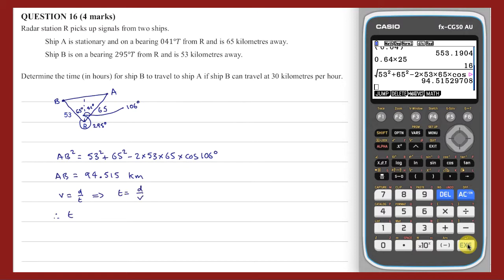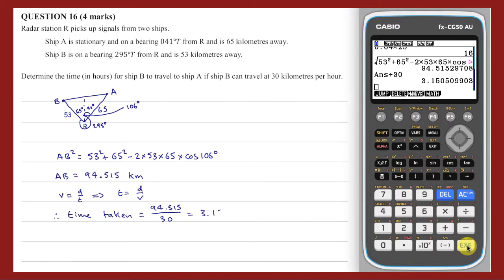If velocity equals distance over time, then time equals distance over velocity. Hence, the time taken for the ship to travel from B to A is 94.515 kilometres divided by 30 kilometres per hour, which equals 3.15 hours.